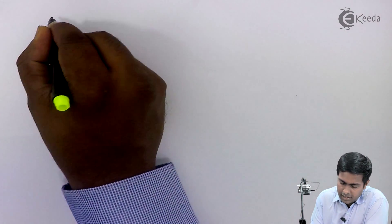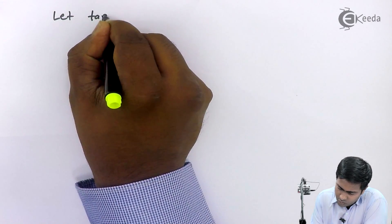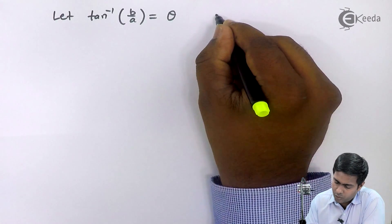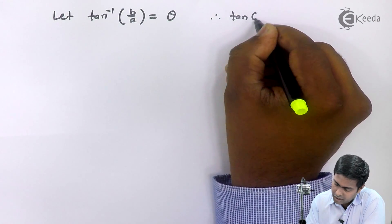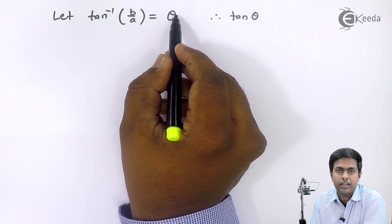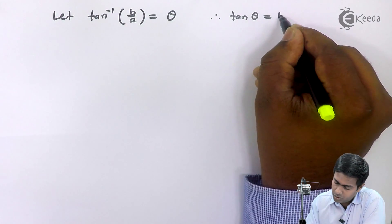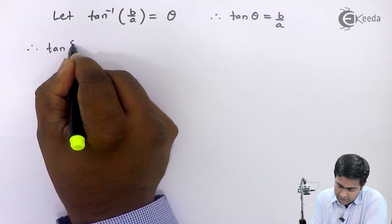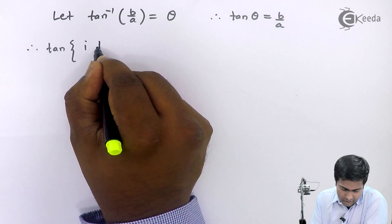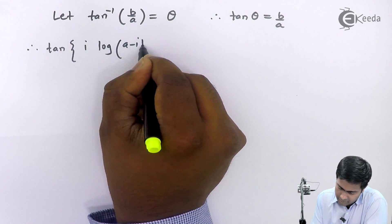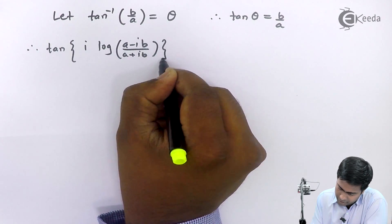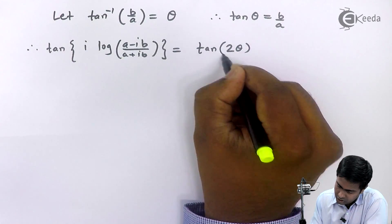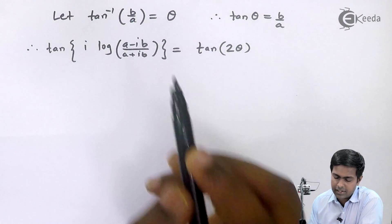Let tan⁻¹(b/a) = θ, therefore tan θ = b/a. The expression tan of i·log((a − ib)/(a + ib)) then becomes tan(2θ), because we are substituting tan⁻¹(b/a) as θ.